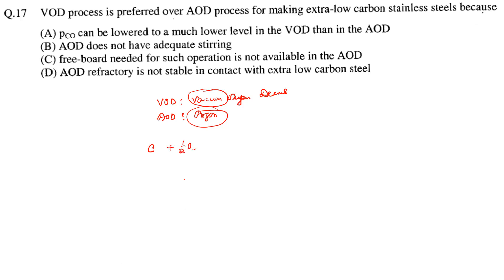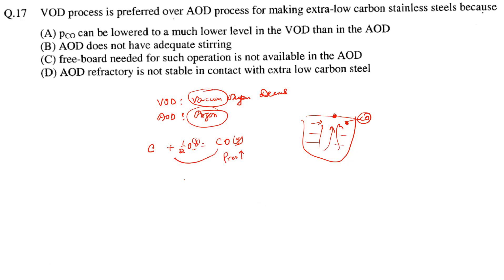The reaction is: C + ½O₂ → CO. CO is a gas and escapes. If you do not allow easy escape of CO, the partial pressure increases due to CO accumulation, driving the reaction backward. For a better forward reaction we need very low pressure. Between VOD and AOD, VOD will have the lower pressure.